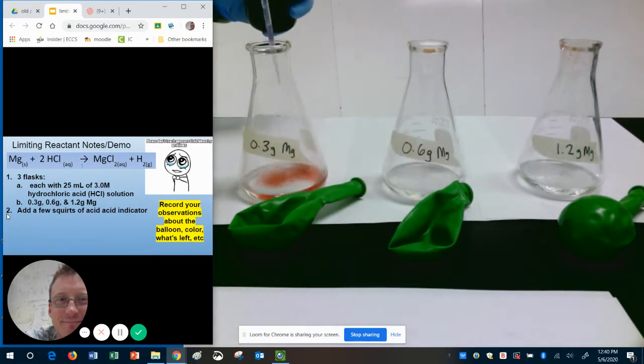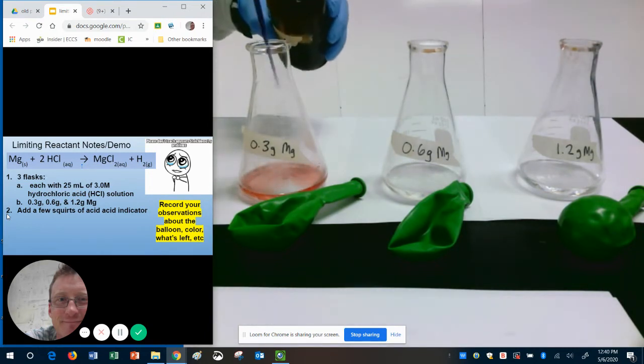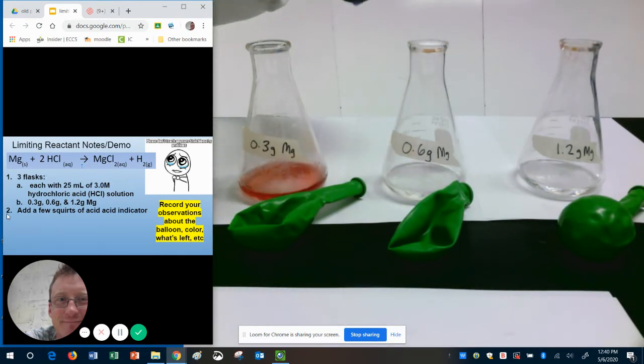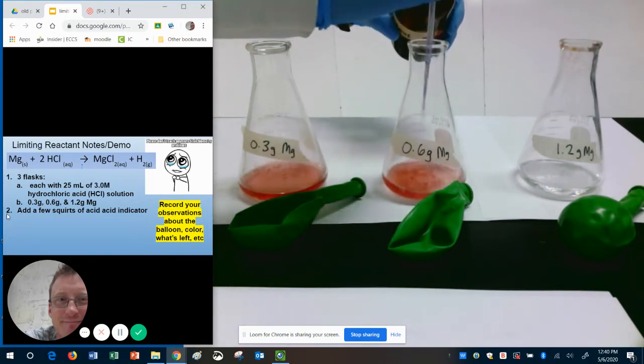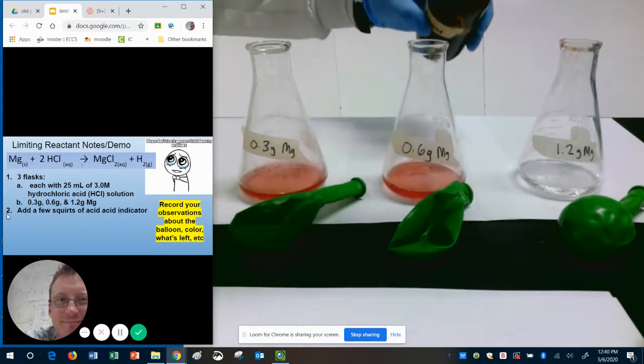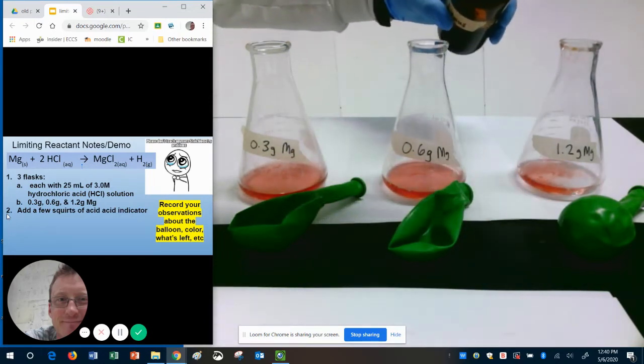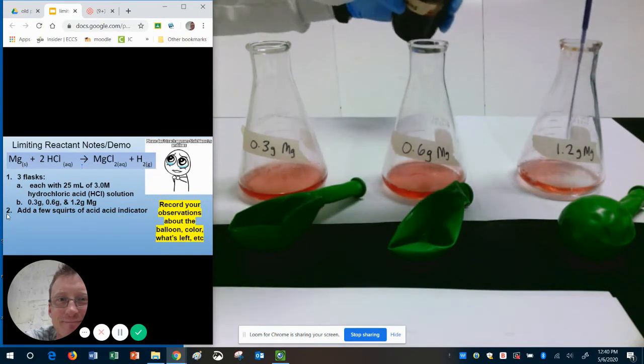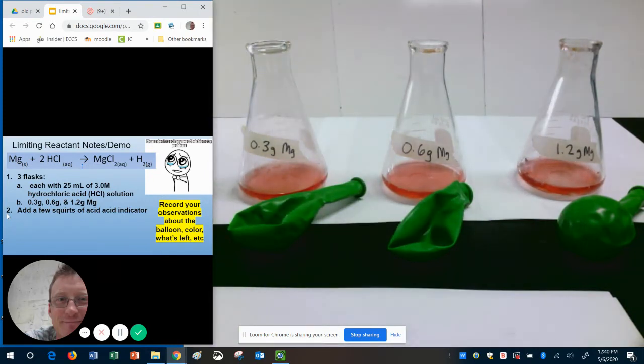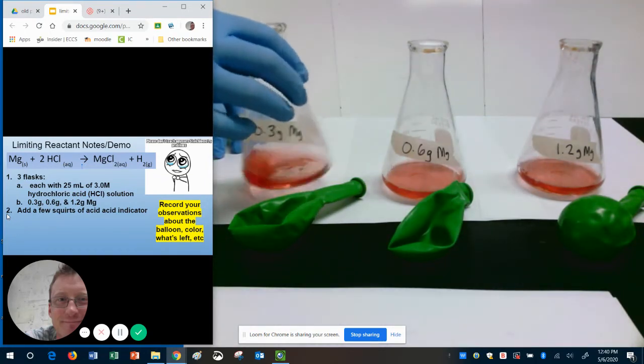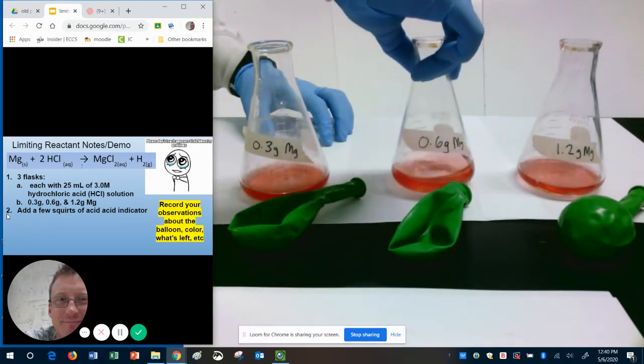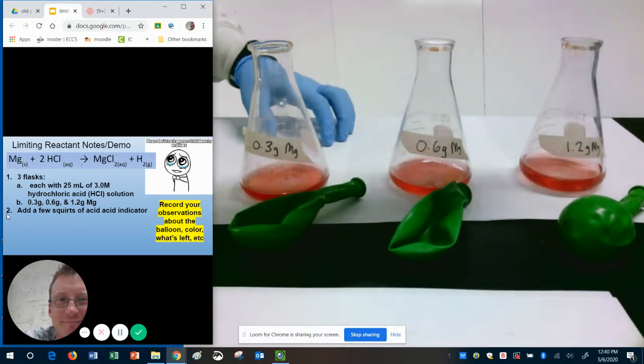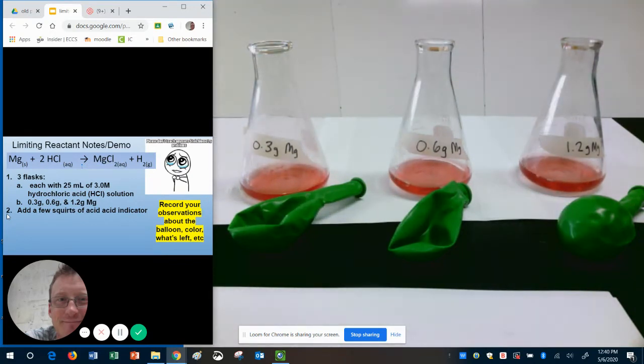So I'm going to put a squirt or two of indicator into each of these containers. Again, each of these has 25 milliliters of hydrochloric acid, hydrogen chloride, HCl. Those are all different ways of saying the same thing. So they all have the same amount of acid in them. And when you see that, this indicator, if there is any acid in our liquid, it will have that pinkish-reddish color.